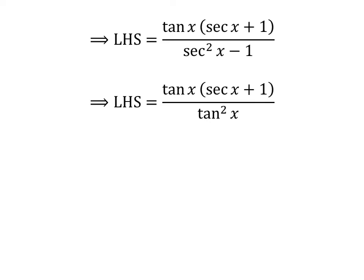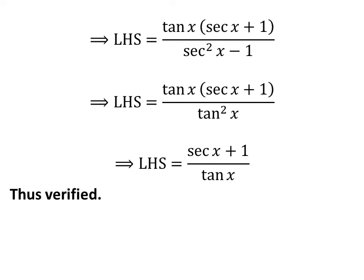We know the trigonometric identity: square of secant of x minus 1 is equal to square of tangent of x. Thus, the left hand side of the identity is equal to tangent of x times secant of x plus 1 upon square of tangent of x. The verification of this identity has been explained in the video appearing in the upper right corner, and the link is mentioned in the description section. Cancelling out the common factor tangent of x in the numerator and the denominator gives us: left hand side of the identity is equal to secant of x plus 1 upon tangent of x.